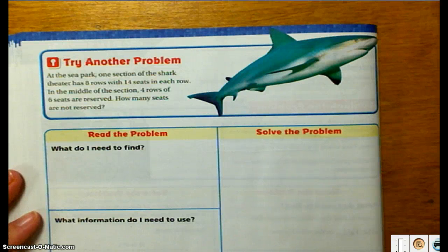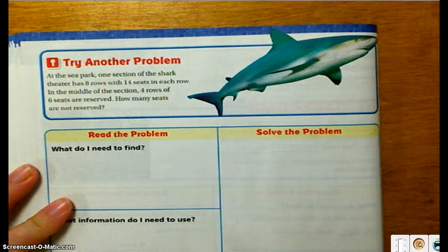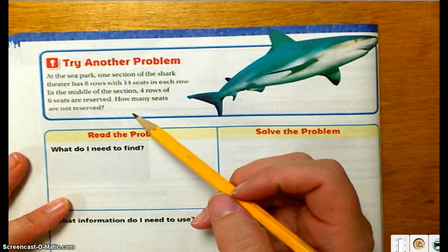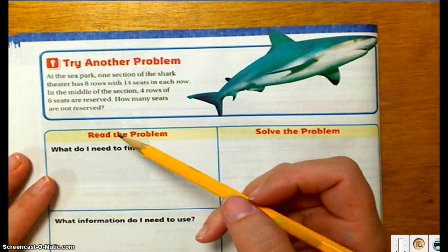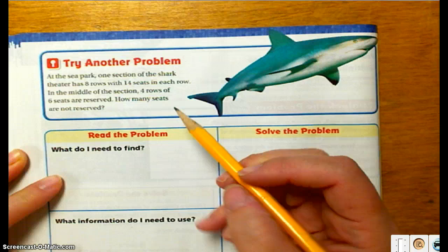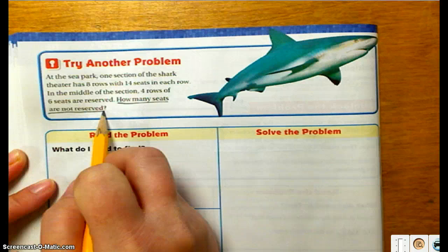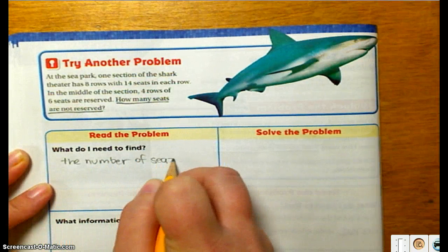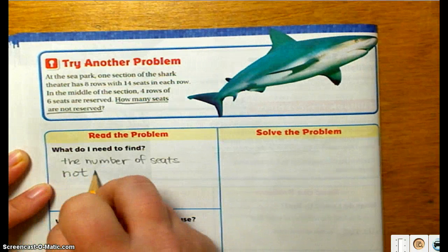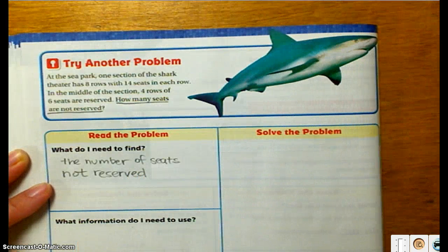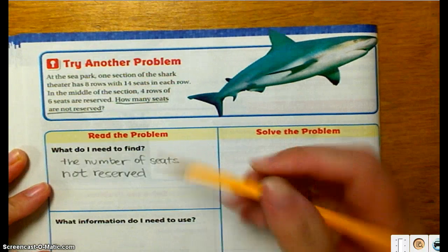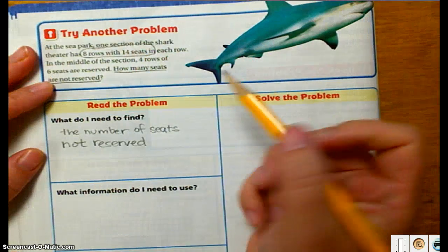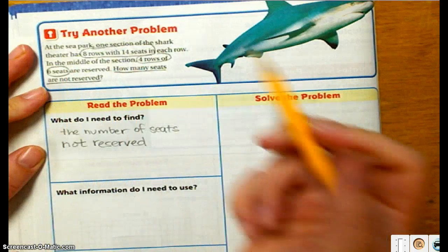Now we're moving on to the problem on page 114 that says try another problem. At the sea park, one section of the shark theater has 8 rows with 14 seats in each row. In the middle of the section, 4 rows of 6 seats are reserved. How many seats are not reserved? I'm going to go back to the problem and underline what I need to find: how many seats are not reserved. Down here I need to find the number of seats that are not reserved.